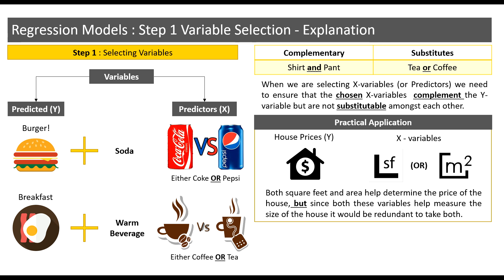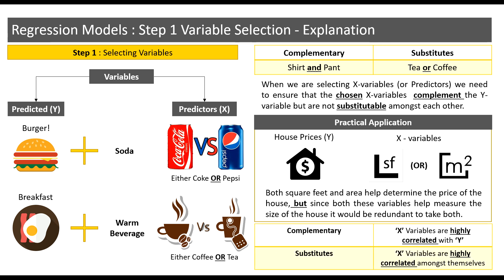Now is there a way to measure whether a variable is complementary or a substitute? Well there is. Remember in the model prerequisite section of regression models we went through the concept of correlation. We will use the concept of correlation to select the appropriate X variables. We need to select X variables that are highly correlated with a given Y variable. We also need to ensure that the X variables are not substitutes like Coke and Pepsi, or square feet and area. Hence, to spot whether two X variables are substitutable, we look at whether they are highly correlated amongst each other.